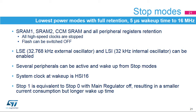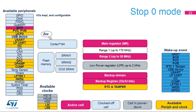STM32G4 devices feature two stop modes, stop 0 and 1, which are the lowest power modes with full retention and only a few microseconds wake-up time to run modes at 16 MHz. The contents of SRAM and all peripheral registers are preserved in stop modes. All high-speed clocks are stopped. The 32.768 kHz external oscillator and 32 kHz internal oscillator can be enabled. Several peripherals can be active and wake up from stop mode. System clock on wake-up is the internal high-speed oscillator at 16 MHz.